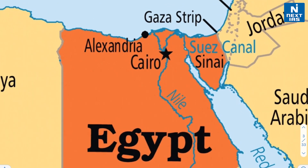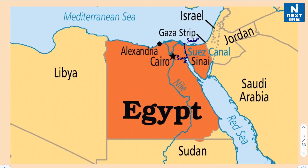Coming to this region, here we have the very famous Suez Canal. It starts from Port Said in the north and ends at Port Suez in the south. The Red Sea is a narrow strip of water that lies in a fault depression separating two great blocks of Earth's crust — that is Arabia and North Africa.